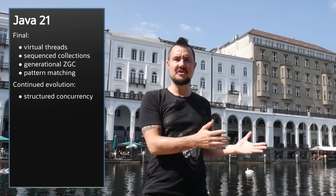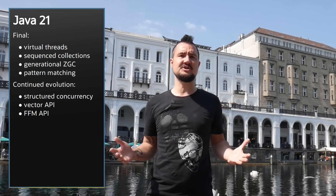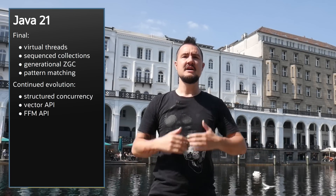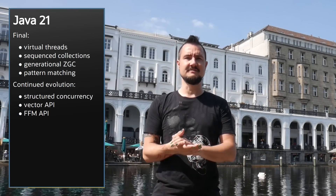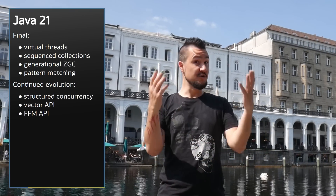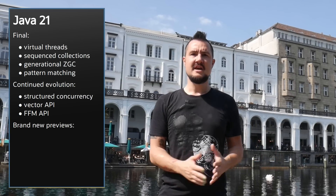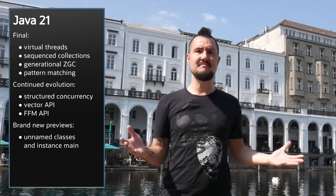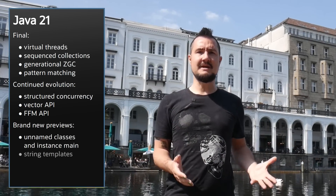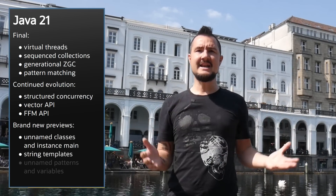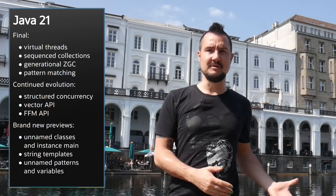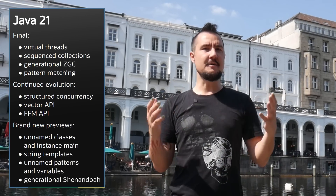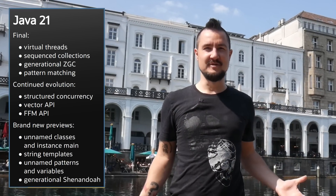Structured Concurrency, Vector API, Foreign Function Memory API — they all progress towards finalization. Or is it new previews that you're thirsting for? There are unnamed classes and instance main, string templates, unnamed patterns and variables, and another big GC improvement.